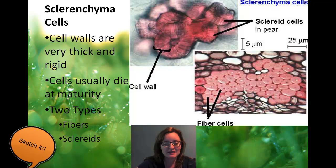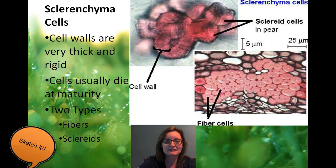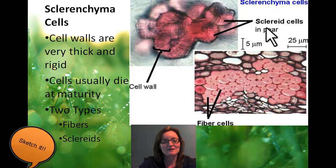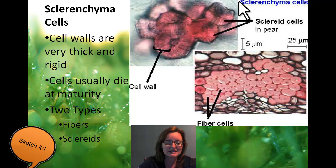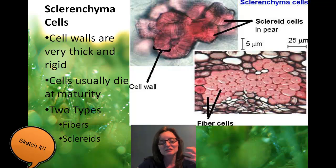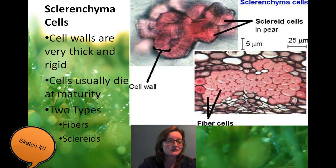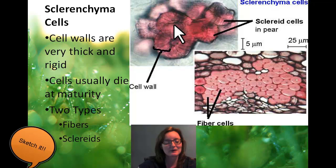The next and final type is sclerenchyma cells, and there are actually two types: fiber cells and sclereids. Sclereids are a little more rigid than fiber cells. Fibers are more flexible but also more numerous, usually found in clusters. They are very thick and rigid, and in their maturity they are actually dead. When they're dead, there's not as much moisture or water in them, so you're left with that hardened skeleton of the cell wall. Cell walls of plants are made of cellulose — the stuff we can't digest — which turns into great fiber for humans, but also helps provide support for plants so they can stand up on their own.